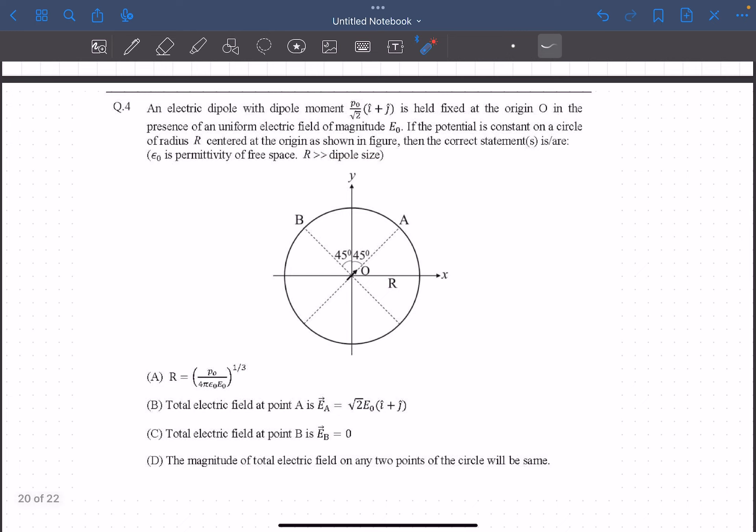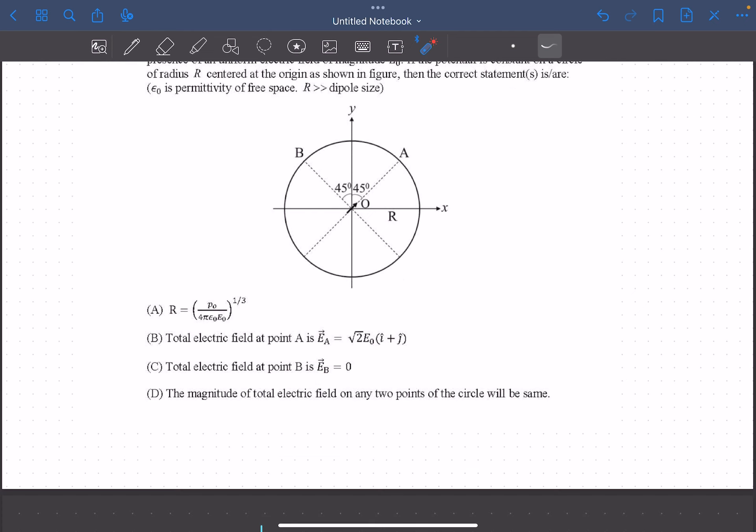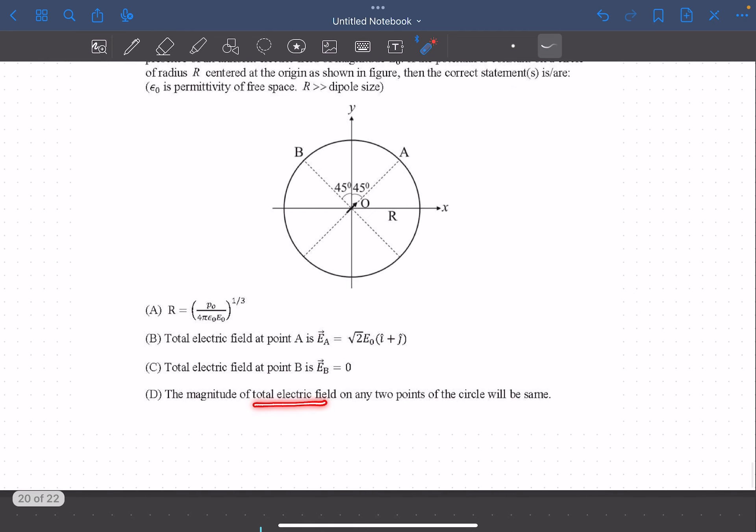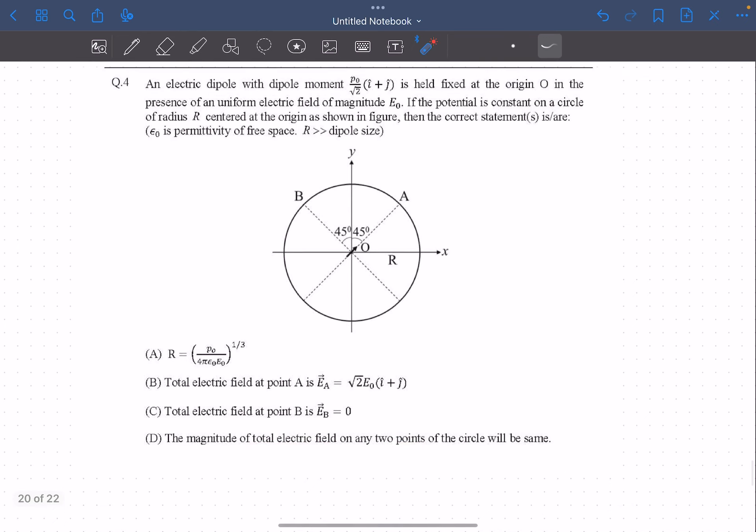We have to find the radius of the circle, determine the electric fields at points A and B, and discuss if the magnitude of the total electric field at any two points on the circle is the same or different. Do give this problem a try and then come back for the solution.